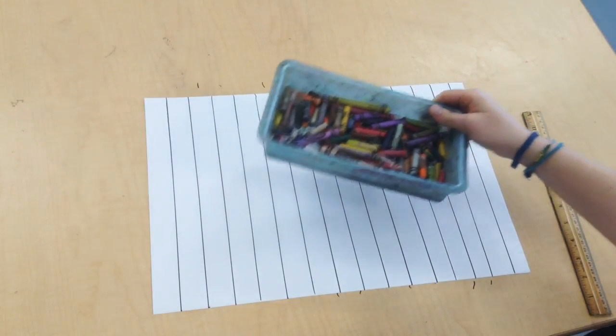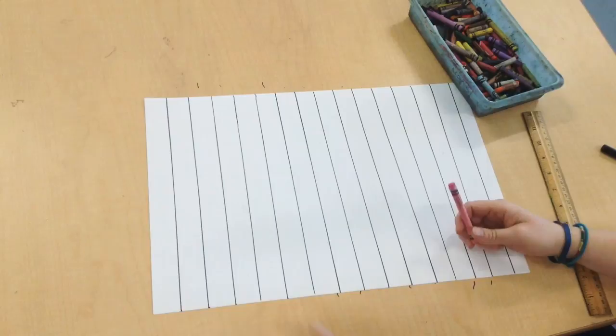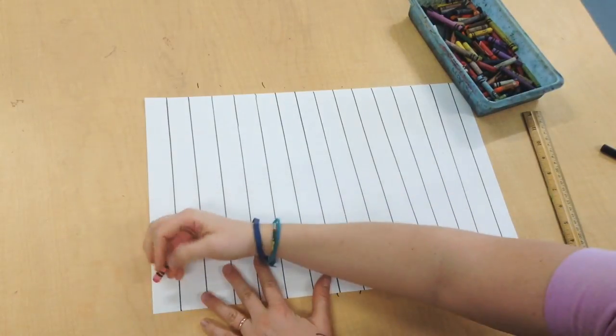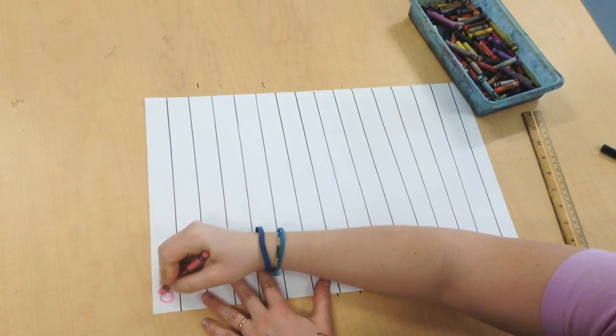Now I'm ready to add my patterns. Today we're going to use crayons to make our patterns. I'm just going to start at the top of my paper and draw some simple patterns.